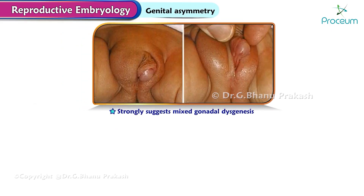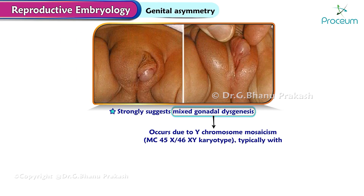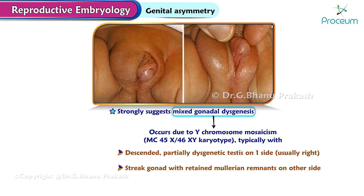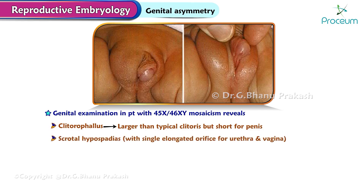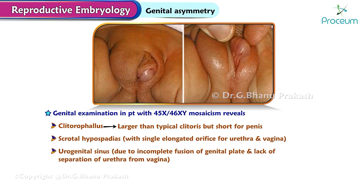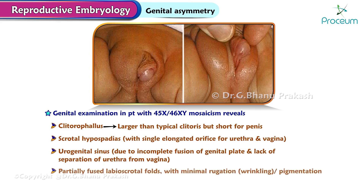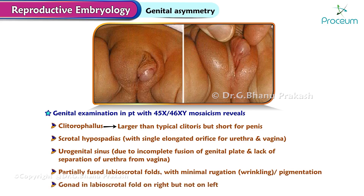Genital asymmetry strongly suggests mixed gonadal dysgenesis. Mixed gonadal dysgenesis occurs due to Y chromosome mosaicism, most commonly a 45,X/46,XY karyotype, typically with a descended partially dysgenetic testis on one side (usually the right), a streak gonad with retained Müllerian remnants on the other side, and atypical genital appearance often with asymmetry. Examination reveals a clitorophallus longer than a typical clitoris but short for a penis, scrotal hypospadias with a single elongated orifice for the urethra and vagina (urogenital sinus) due to incomplete fusion of the genital plate, partially fused labioscrotal folds with minimal rugation or pigmentation, and a gonad in the labioscrotal fold on the right but not on the left.